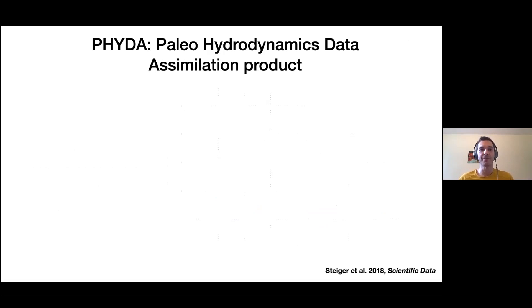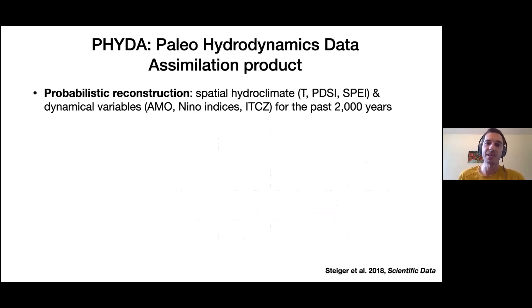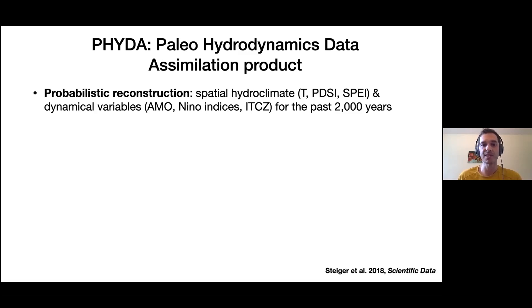FIDA is what we call a paleohydrodynamic state assimilation product. It's a probabilistic reconstruction with an ensemble estimate, and includes spatial variables such as temperature, PDSI, and SPEI — two hydroclimate variables that are very commonly used. We also have dynamical variables: the Atlantic Multidecadal Oscillation (AMO), all the different flavors of the Niño indices, as well as the Intertropical Convergence Zone (ITCZ), for the past 2,000 years. These variables are hydroclimate-focused and were the most skillfully reconstructed in tests that we did.